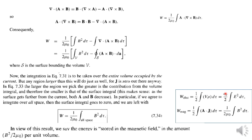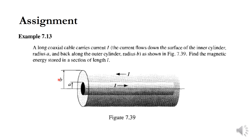The factor epsilon zero is replaced by 1 over mu zero, giving 1 over 2 mu zero times the integral of B squared. These are equivalent results. As an important example: a long coaxial cable carries current I — it flows down the surface of the inner cylinder. Find the magnetic energy stored in a section of length L.